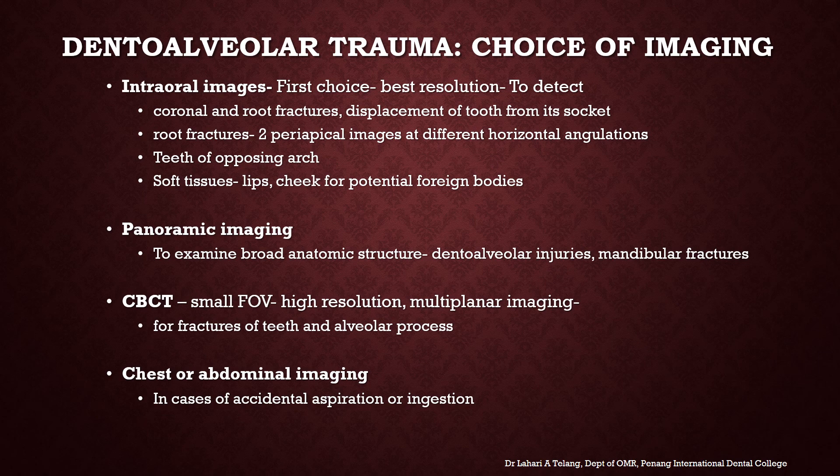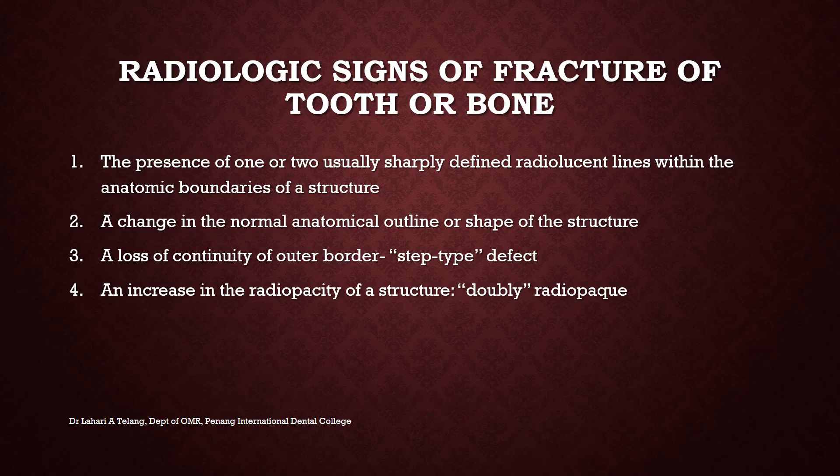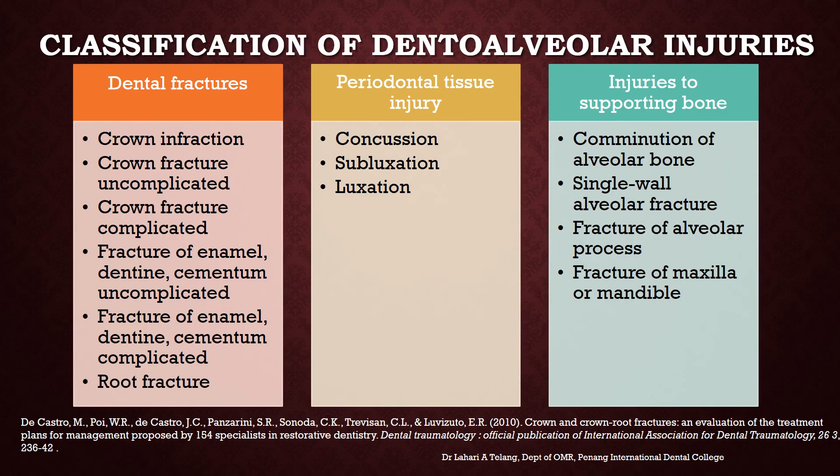The choice of imaging in dental alveolar trauma depends on severity and area of involvement. Intraoral images are the first choice, having the best resolution, and are specially used to detect coronal and root fractures and displacement of teeth from their sockets. Root fractures benefit from periapical images at two different horizontal angulations. Images of the opposing arch should be taken to rule out fractures there. Soft tissues like lips and cheeks should be imaged for potential embedded foreign bodies. CBCT small field of view provides high resolution multiplanar imaging for fractures of teeth and alveolar process.